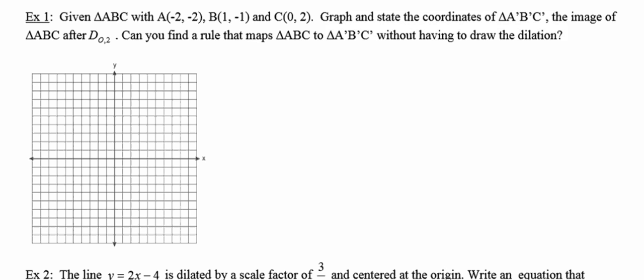which is going to be the image of triangle ABC after a dilation about the origin of scale factor 2. So that O stands for the origin, 2 is the scale factor. And then once we do that,